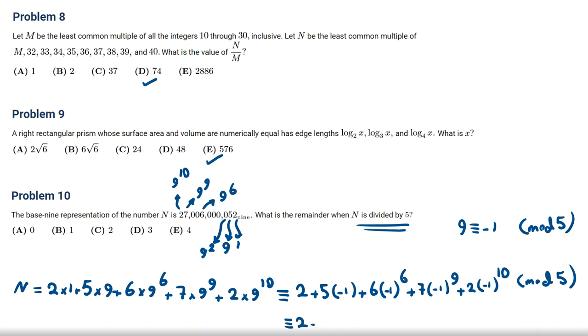If we calculate it, it will be 2 minus 5 plus 6 minus 7 plus 2. 6 minus 5, 1. 1 plus 2, 3. 3 plus 2, 5. 5 minus 7, negative 2. You can add by 5 and it will be 3. So the remainder will be 3, which is D. Okay, the answer was this. And we've solved these three problems.